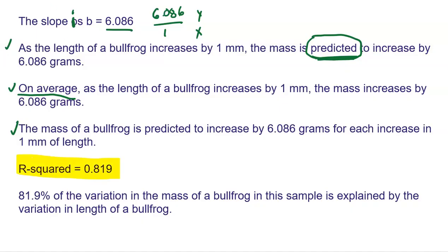Now for interpreting R squared, which again is that percentage, 81.9% of the variation in the mass of a bullfrog in this sample is explained by the variation in length of a bullfrog. So again, it's important that you understand that word variation is in there twice because again, we've got a bunch of different masses, a bunch of different lengths. They're not all going to be perfectly matched up. And it's not always going to be exactly a relationship that we see like, hey, one millimeter means 6.86 grams. It's just an average. It's just a prediction. But here we're actually saying how connected these two variables are. The differences in the mass are actually because of the differences in the length. And that's where the 81.9% comes in.